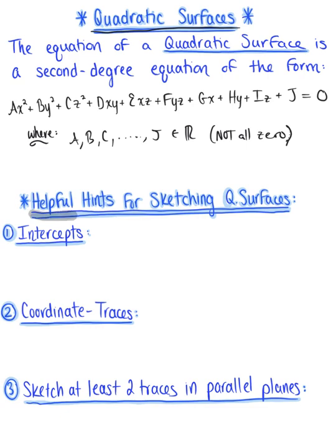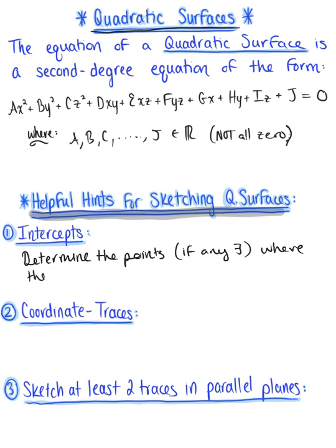Helpful hints include finding the intercepts. Finding the x, y, and z intercepts, if they exist, can always help you with sketching, just like with two dimensions. We want to determine the points, if any exist, where the surface crosses or intersects one of the coordinate axes.